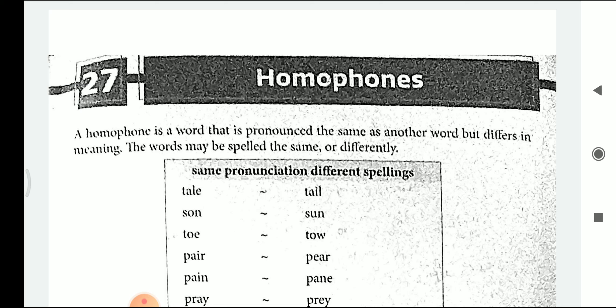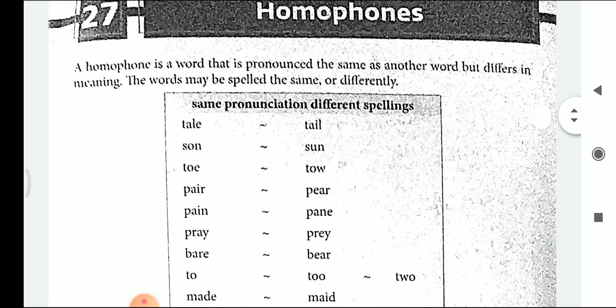My dear students, today we are going to see chapter number 27, that is homophones. What are homophones? A homophone is a word that is pronounced the same as another word but differs in meaning. In simple language, the pronunciation of the word will be similar but the meaning of those words will be different.